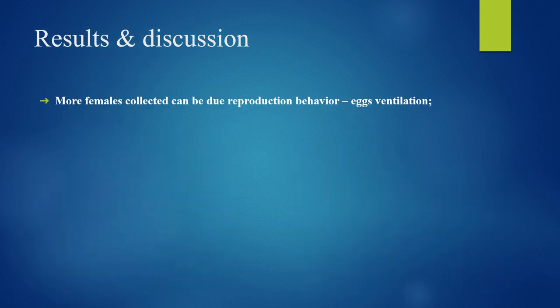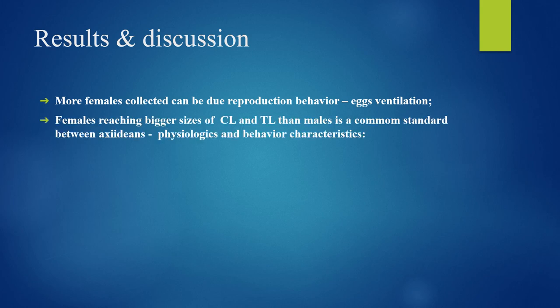More females collected can be due to reproductive behaviors. As ovigerous females go to the upper burrow for egg ventilation, females reaching bigger size of carapace length and total length than males is a common pattern among axiideans, and this can be attributed to physiological and behavioral characteristics.